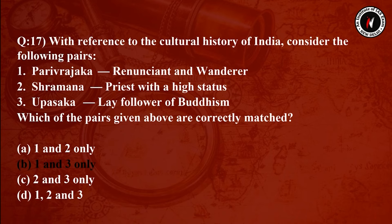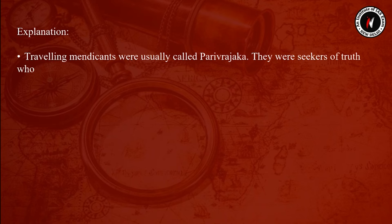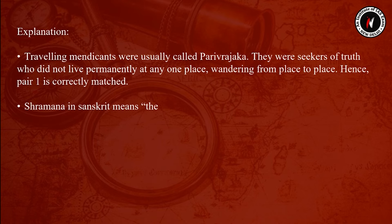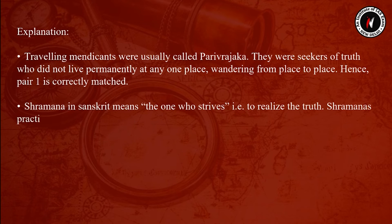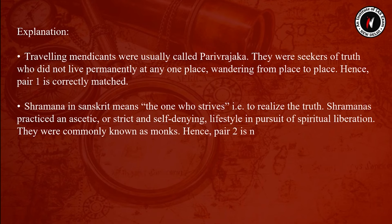The answer is Option B — pairs 1 and 3 are correctly matched. Traveling mendicants were usually called Parivrajaka; they were seekers of truth who did not live permanently at any one place, wandering from place to place, so pair 1 is correct. Shramana in Sanskrit means 'one who strives to realize the truth.' Shramanas practiced an ascetic, self-denying lifestyle in pursuit of spiritual liberation and were commonly known as monks, so pair 2 is not correctly matched.